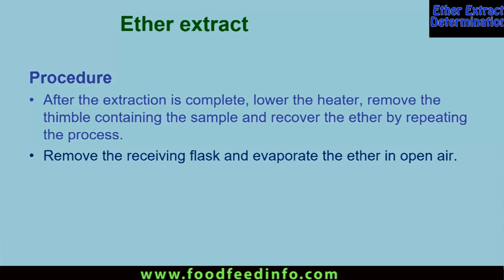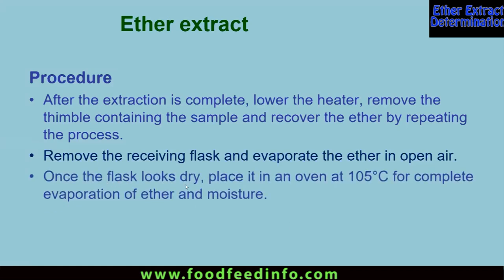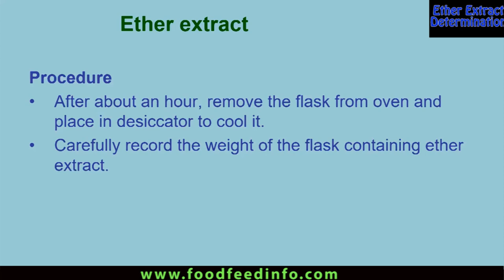When you see colorless ether in the extraction chamber, that gives a clear indication that extraction has been completed. At that point switch off the heater, remove the receiving flask, and evaporate the ether in open air. Once the flask looks dry, place it in the oven at 105°C for complete evaporation of ether and moisture. Do not put the flask directly into the oven when it still has ether, because ether is highly volatile and at 105°C there is a risk of fire hazard. Allow the ether to evaporate in open air, then place the flask in the oven. After about an hour, remove the flask and place it in a desiccator to cool, then carefully record the weight of the flask containing the ether extract.